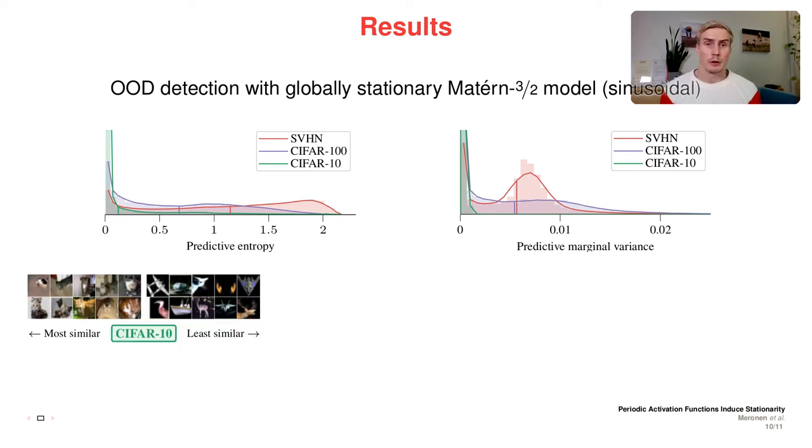We can also look at some sample images from the test sets. For the CIFAR-10 test images, the ones that the model has classified as most similar to the training data are clear, quite usual, easily classifiable examples of CIFAR-10 images. The least similar ones are visually quite extreme and not like most of the training set images.